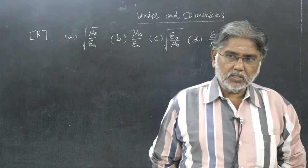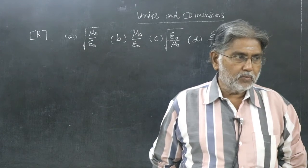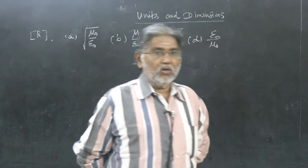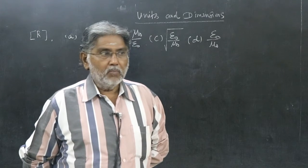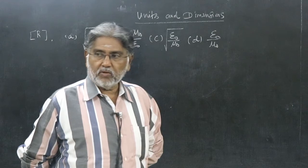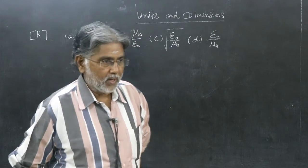So epsilon naught is known as permittivity of free space, 8.85 into 10 to the power of minus 12 farad per meter. Mu naught, permeability of free space, 4 pi into 10 to the power of minus 7 tesla meter per ampere.